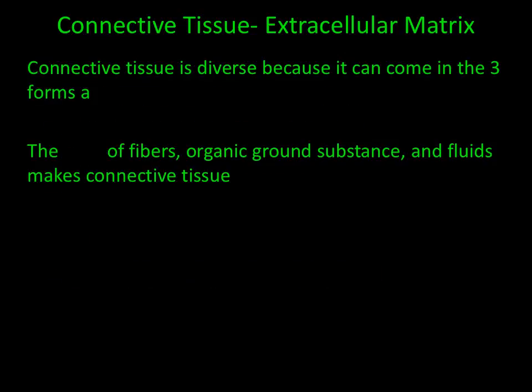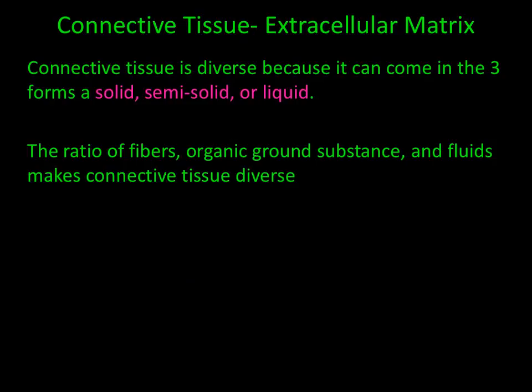Connective tissue is so diverse because it can come in three different forms: solid, semi-solid, or liquid. And it's the ratio of fibers, organic ground substance, and fluids which makes connective tissue so diverse.